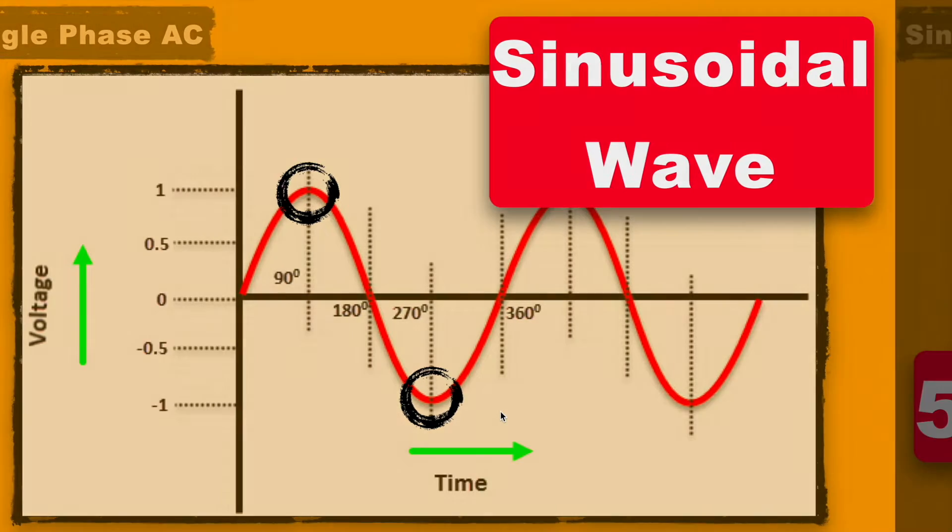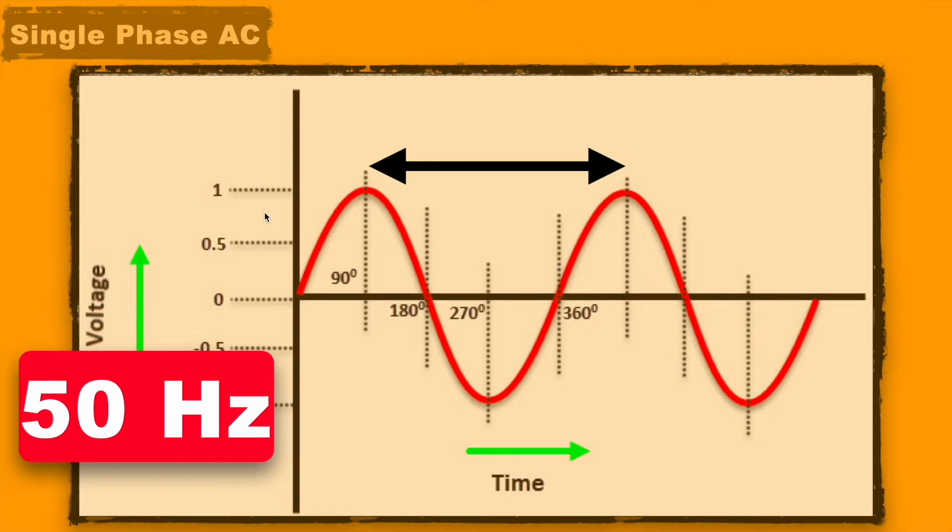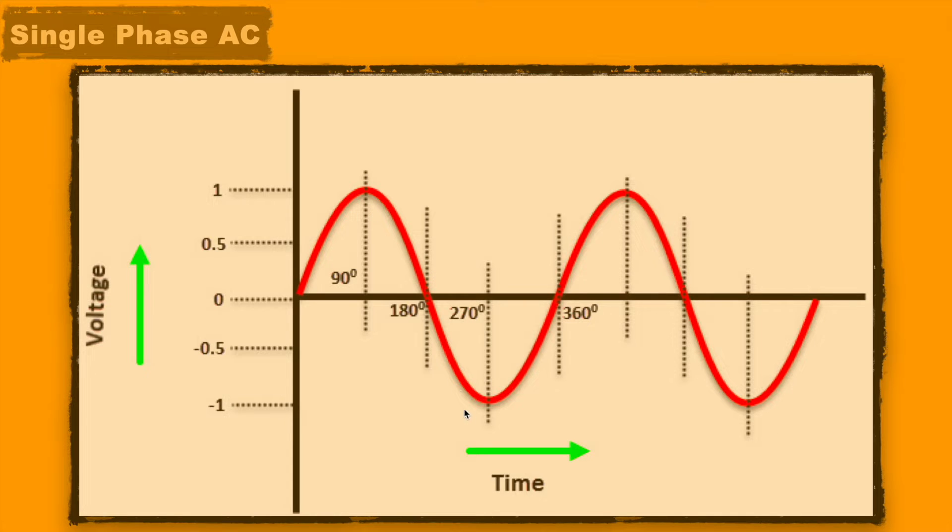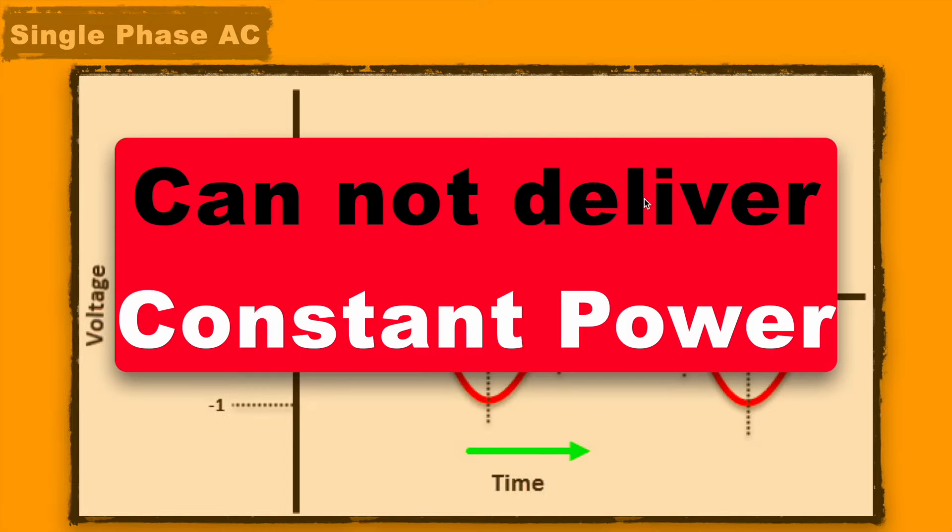And commonly this single phase AC supply has 50 to 60 hertz of frequency, means its time period is 1 by 50 second or 20 milliseconds. And since this voltage fluctuates a lot, it cannot deliver constant power to the load.